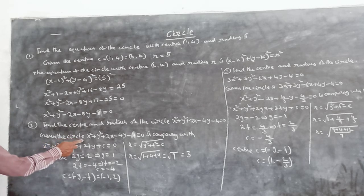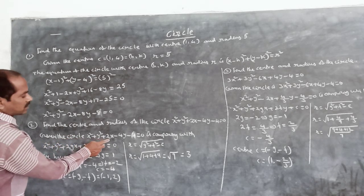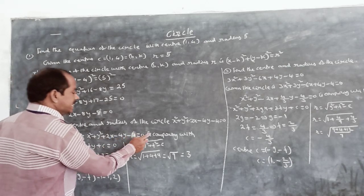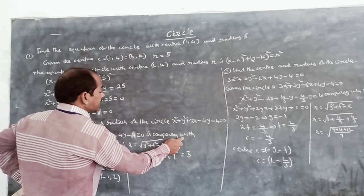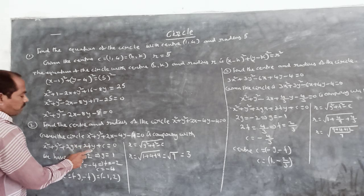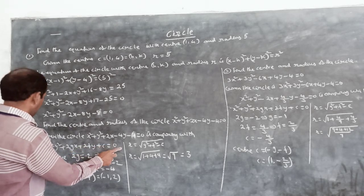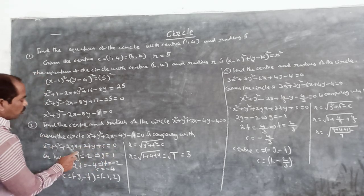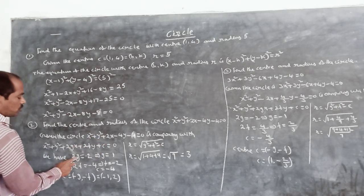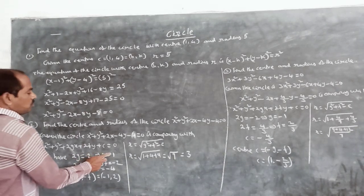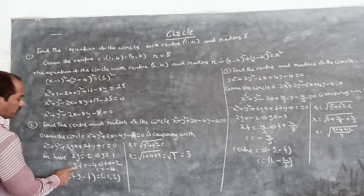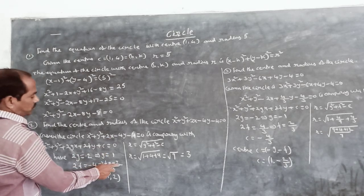Given the circle: x square plus y square plus 2x minus 4y minus 4 is equal to 0. Comparing with the general equation of the circle: x square plus y square plus 2gx plus 2fy plus c is equal to 0. We have 2g is equal to 2, therefore g is equal to 1.